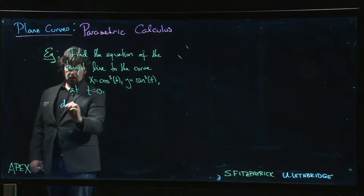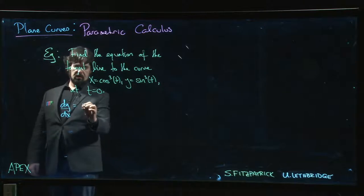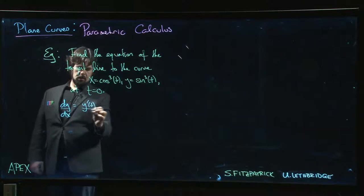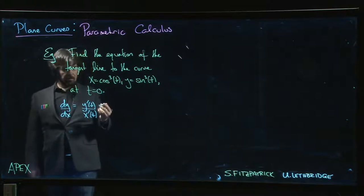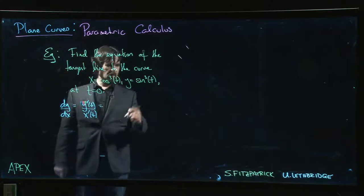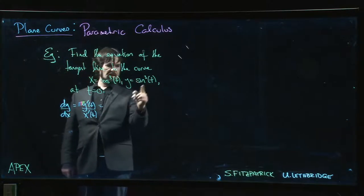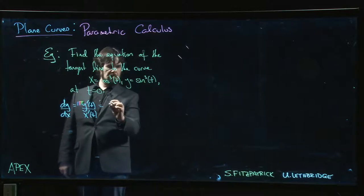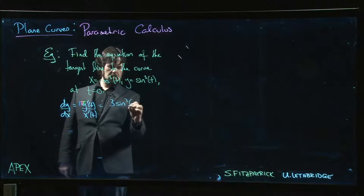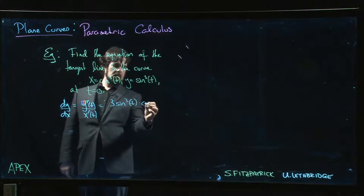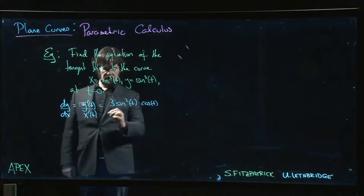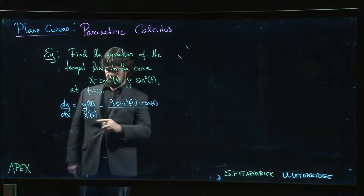We'll proceed as we've done and see what happens. We know that dy/dx is given by y prime of t over x prime of t. So let's figure that out. For y prime, we need the chain rule: y prime is going to be 3 sine squared t times the derivative of the inside, which is cosine.